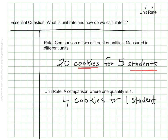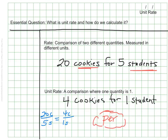So for the cookie example, I can scale the rate of 20 cookies for five students down to four cookies for one student. You'll often see the word 'per' instead — this is a clue word when we're talking about unit rate. It signals one quantity: per student means for each student, one student at a time. When I write the rate as a fraction using equivalent fractions, the denominator has the number one — 20 cookies for five students becomes four cookies for one student.